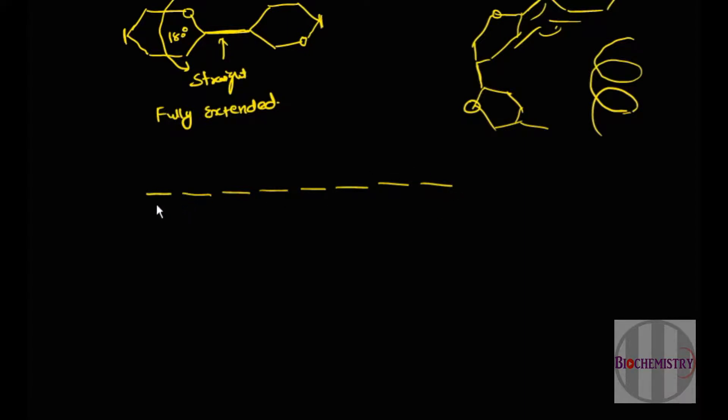Now these many ribbons will be attached laterally by hydrogen bonds. Let's just see four or five chains which are in a lateral relationship.